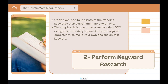The first way is basically using the Redbubble platform. You can do that by using a simple trick on the Redbubble website search bar. Go on the search bar, type each letter one by one — A, B, C — and see which keywords have the scaling graph image next to them. These keywords are trending. Open an Excel sheet, take note of the trending keywords, and then search them up one by one. The simple rule is: if there are less than 300 designs per trending keyword, that's a great opportunity to make your own designs on that keyword.